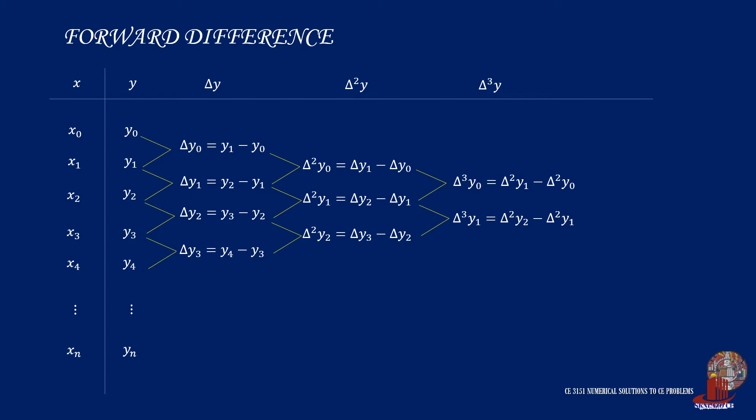When do we end taking differences? We stop when we have similar values after taking differences because eventually subtracting them will give us zero. In forward difference, the first values in every degree of delta are known as leading forward differences.